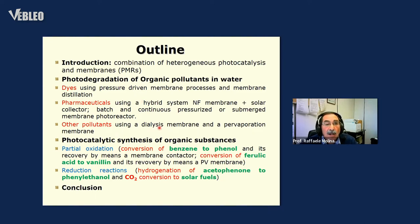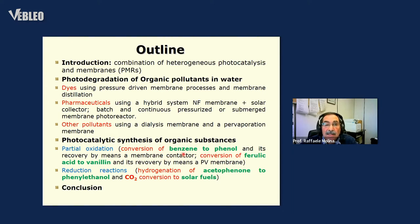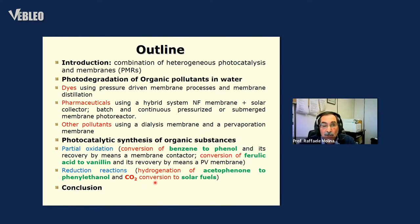Then we skip to partial reactions of synthesis — in particular, partial oxidation. As an example, we see benzene conversion to phenol and ferulic acid to vanillin. And then the reduction reaction, which means hydrogenation of acetophenone to phenylethanol, and something concerning the conversion of CO2 to solar fuels.